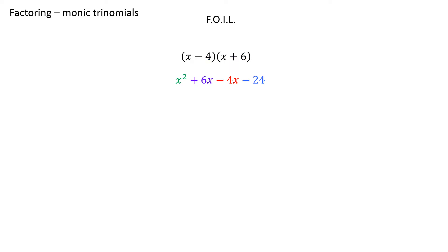You'll recall that once this is done, you can combine the two middle terms most of the time. In this case, you can. 6x minus 4x is positive 2x. And you can see how the three terms in your trinomial answer came from the four letters of FOIL.